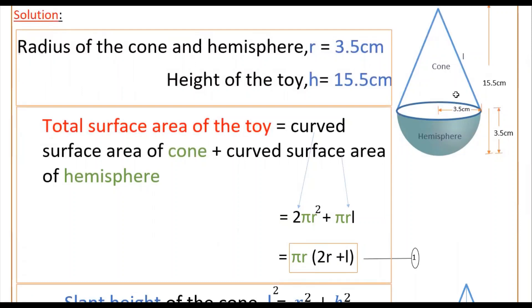The slant height l is the slant height of the cone, so we need to find it. The total height is 15.5 cm, and the hemisphere height equals its radius, which is 3.5 centimeters. So the cone's height is 15.5 minus 3.5, and once we have the cone height, we can find the slant height.